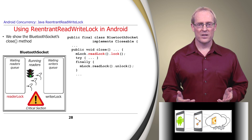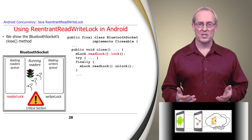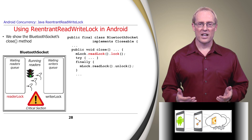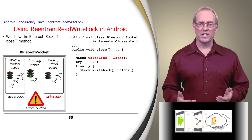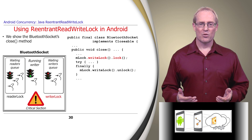When close runs, it first acquires a ReadLock on mLock, executes some operations that examine the state of the socket, and returns if it's already closed, unlocking the ReadLock as it returns. If the socket is not already closed, close acquires a WriteLock, sets the Bluetooth socket state to closed, releases the resources, and unlocks the WriteLock as it returns.